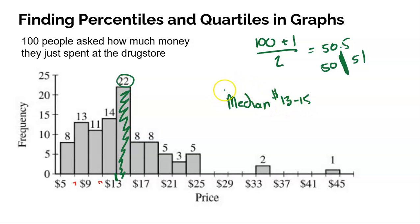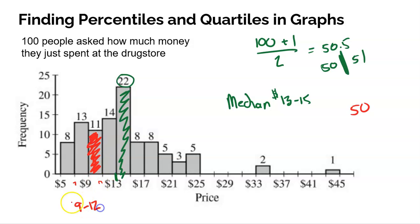What about the first quartile? The first quartile is the middle of the bottom half. With 100 values, there are 50 values in the bottom half, and the middle would be right around the 25th value. 8 plus 13 is 21, and the next bin has 11 values — so the 25th value has to fall somewhere in that bin. Somewhere between $9 and $12 is my first quartile. The 25th and 26th values are going to be somewhere in that bin.